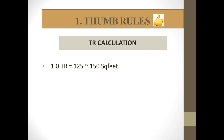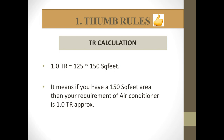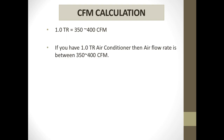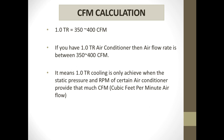The first topic is thumb rules. For tonnage calculation: 1 TR is equal to 125 to 150 square feet — meaning if you have a 150 square feet area, your air conditioner requirement is approximately 1 TR. For CFM calculation: 1 TR is equal to 350 to 400 CFM, meaning if you have a 1 TR air conditioner, the air flow rate is between 350 to 400 CFM. 1 TR cooling is achieved when the static pressure and RPM of the fan provide that much CFM (cubic feet per minute) airflow.